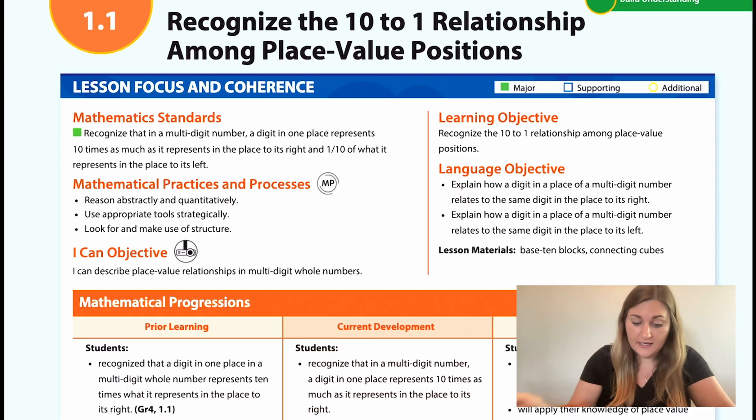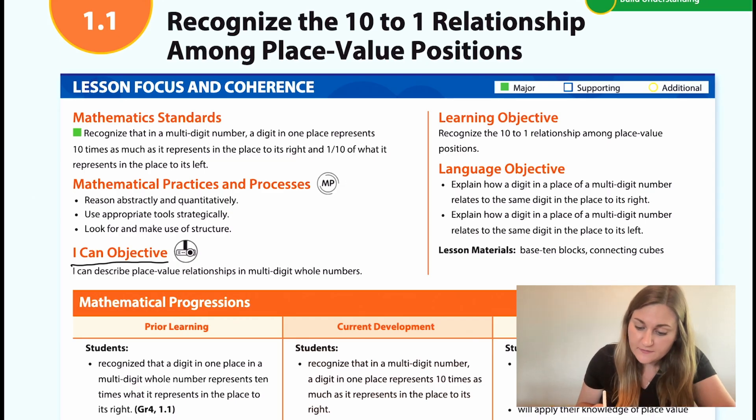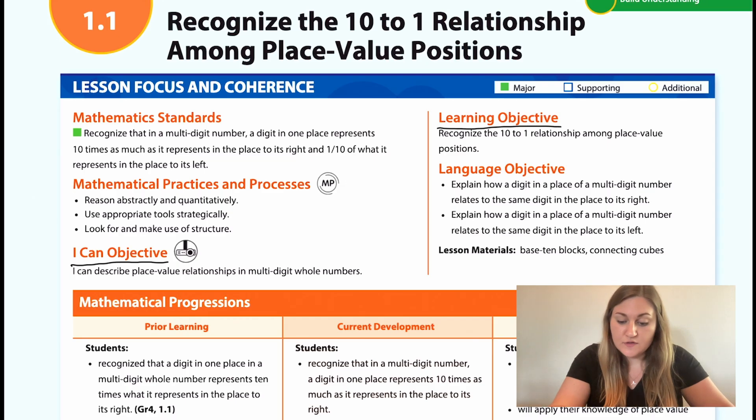I'd like to start out going over the I Can objective, which can be found here. It says I can describe place value relationships in multi-digit whole numbers. And now the learning objective here is students should be able to recognize the 10 to 1 relationship among place value positions.